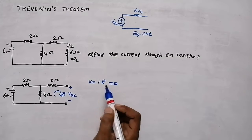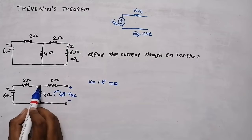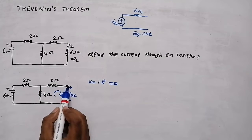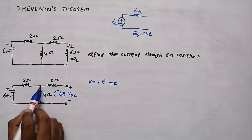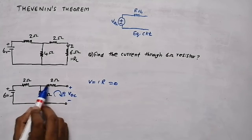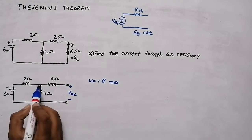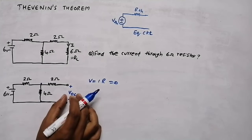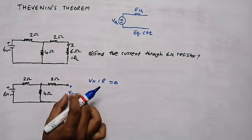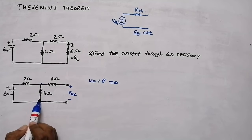If the current through this mesh is zero, the voltage drop across this resistor will also be zero, since V = I × R. So V equals zero. If the voltage drop in this resistor is zero, then whatever voltage we are getting on one side, we get the same on the other side — nothing is dropping here. So finding the voltage at this point gives us the open circuit voltage.